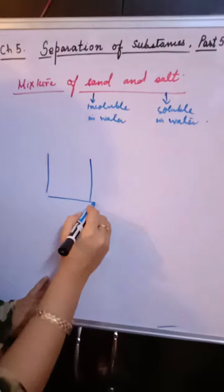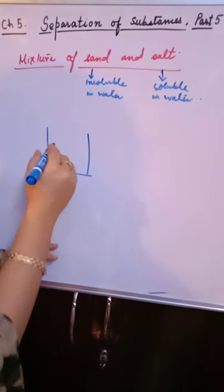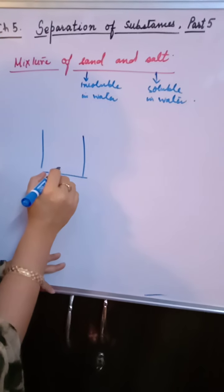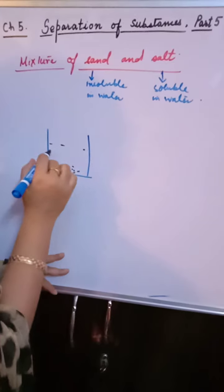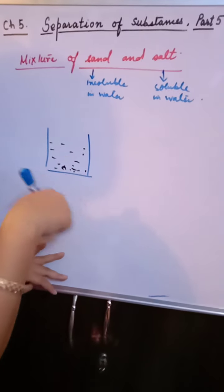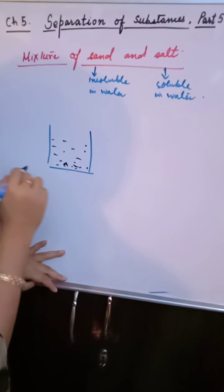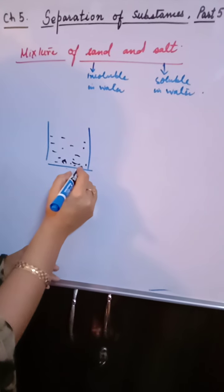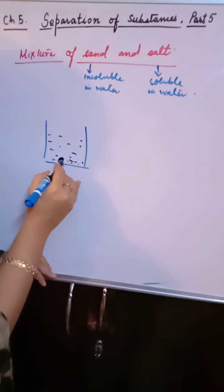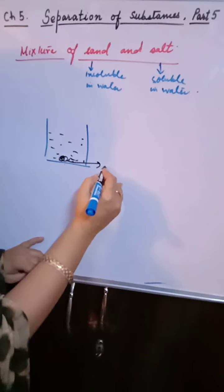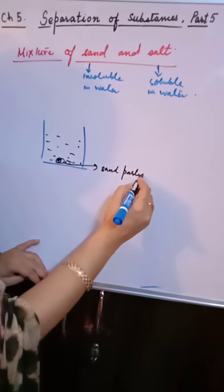Take a beaker or a glass, whatever you have, and add sand and salt. Along with that, add water to it and stir the mixture. You will find that salt, being soluble in water, will disappear. What you will find here is only sand particles.